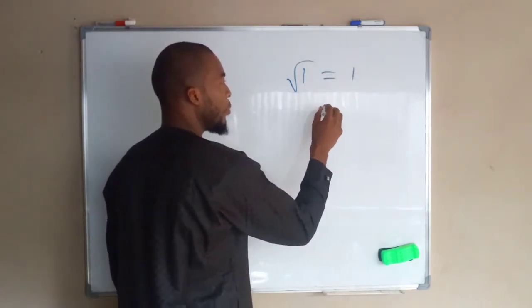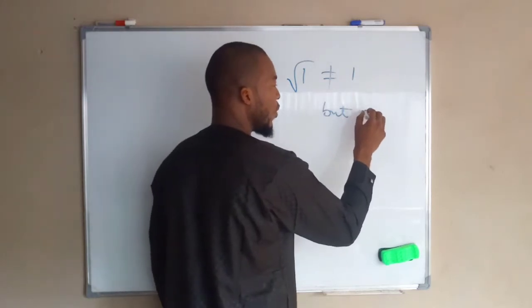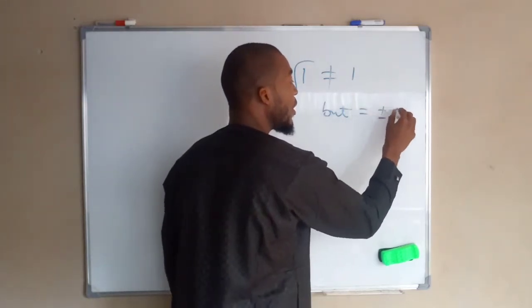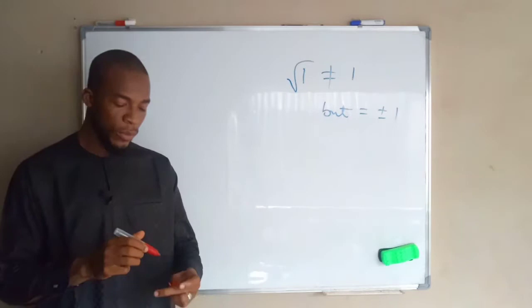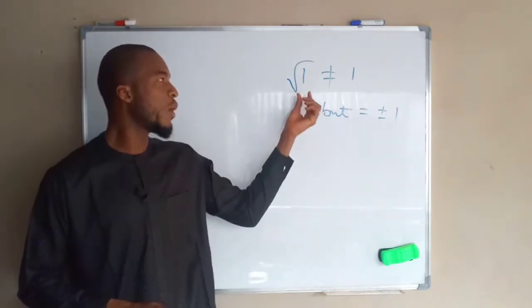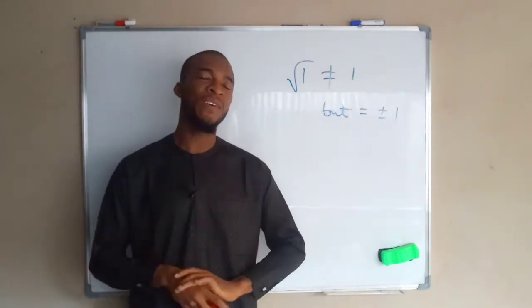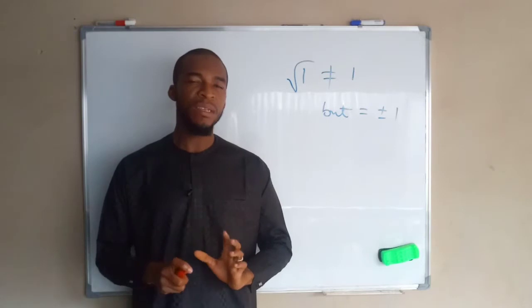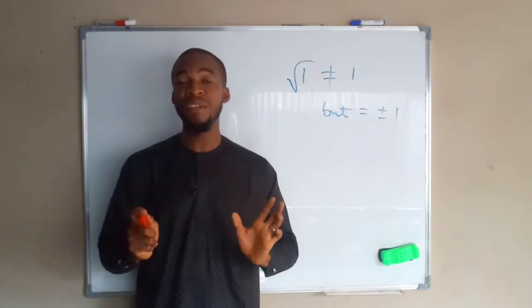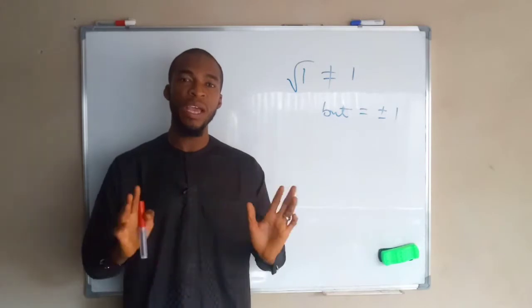Many people have been arguing that square root of one is not equal to one but equals plus or minus one. I spent a lot of energy and time trying to convince them that square root of one is a positive number, but all went in vain. In mathematics, anything you say you have to prove it.